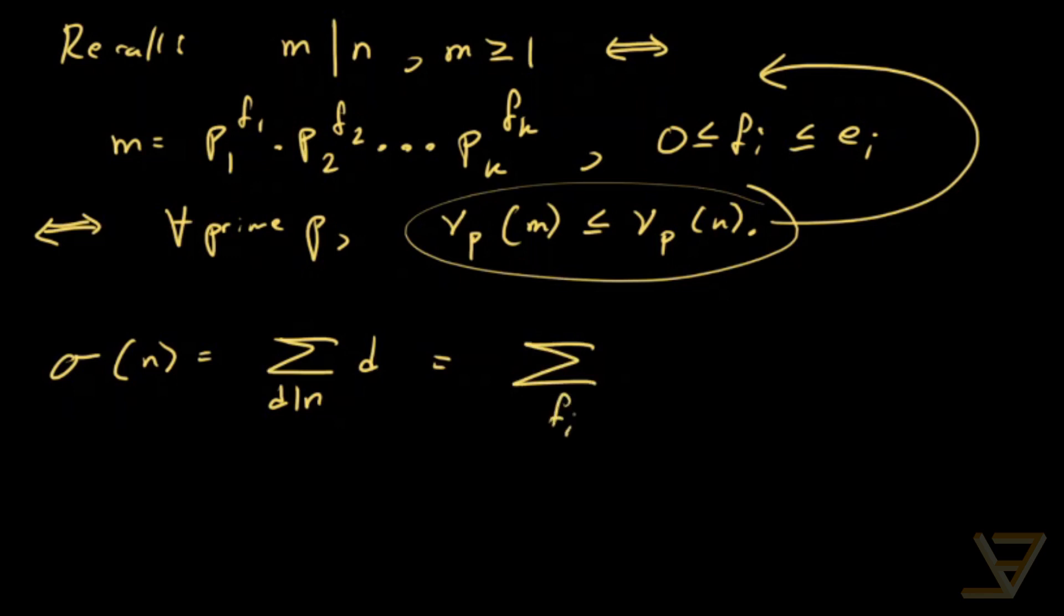Each, we have p1 to the f1, p2 to the f2 all the way through to pk to the fk, and each fi satisfies it is between zero and ei. So this is for i from 1 through k.